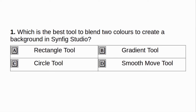Chapter name: Moving images. Which is the best tool to blend two colours to create a background in Synfig Studio? A. Rectangle tool. B. Gradient tool. C. Circle tool. D. Smooth move tool. Answer: B. Gradient tool.